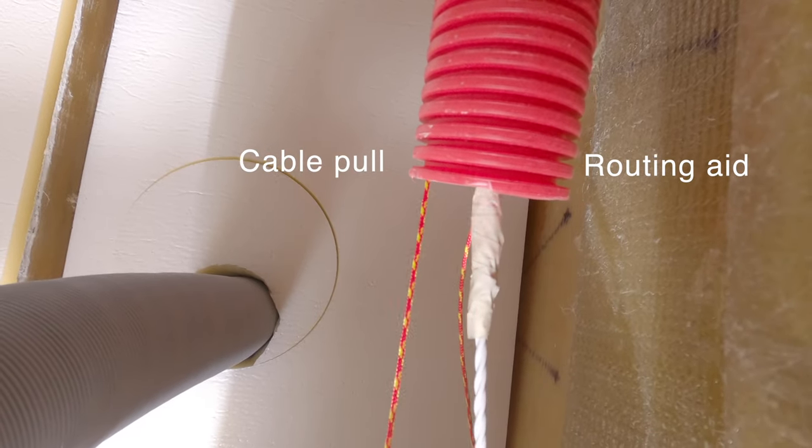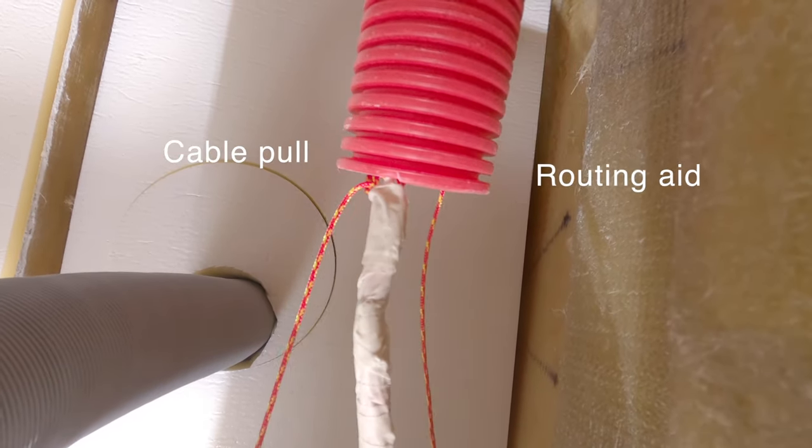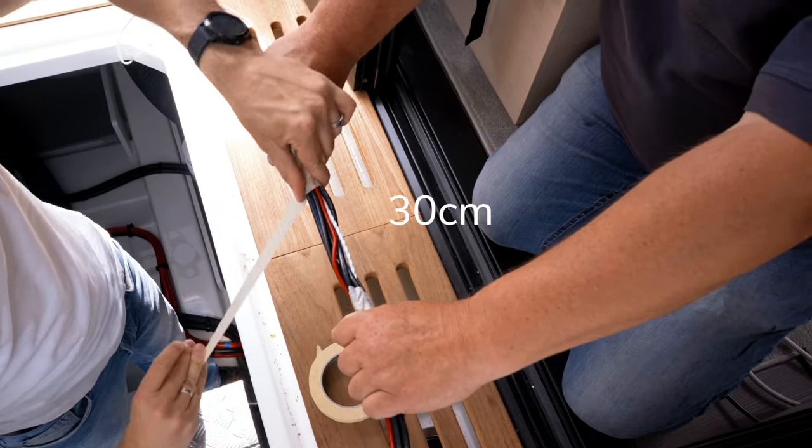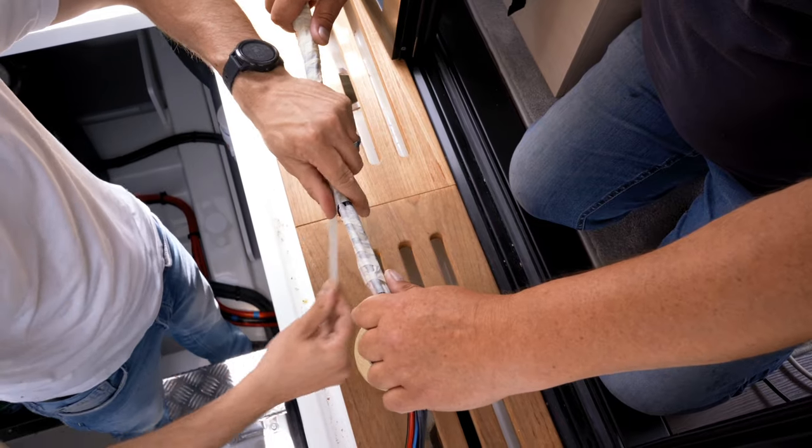We now attach the routing aid to our bundle. We don't want it to come detached from our cable, so we attach it to about 30 centimeters of our strand.